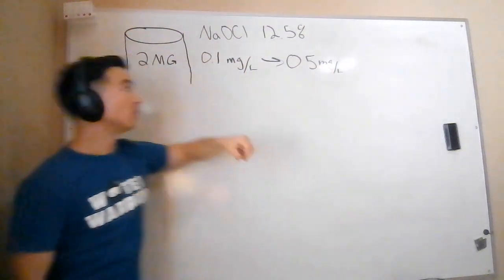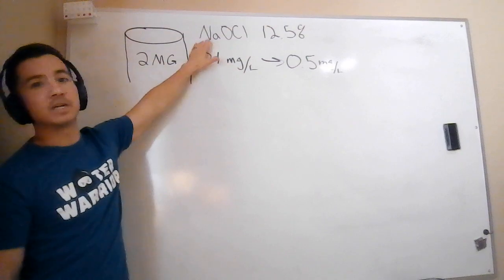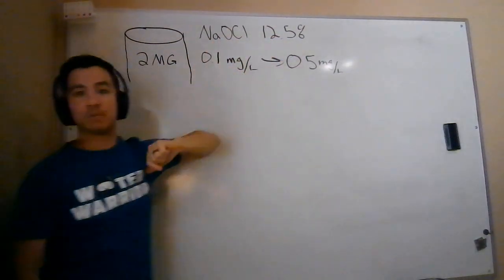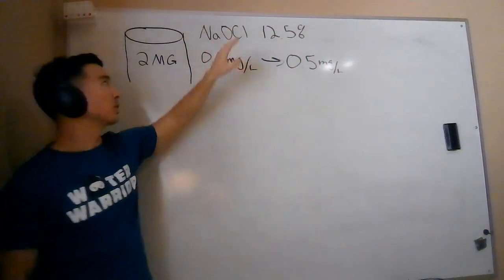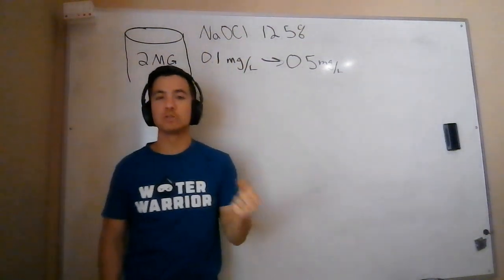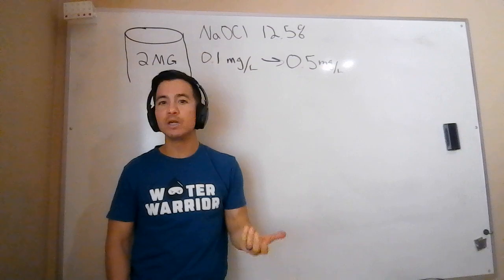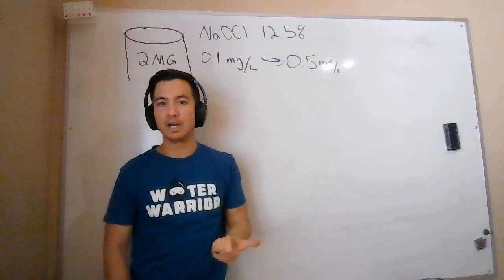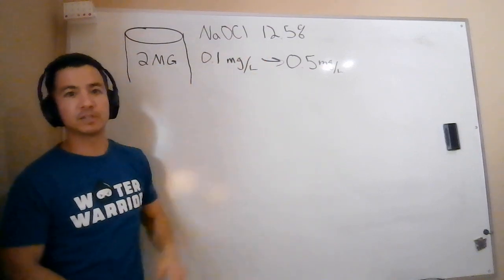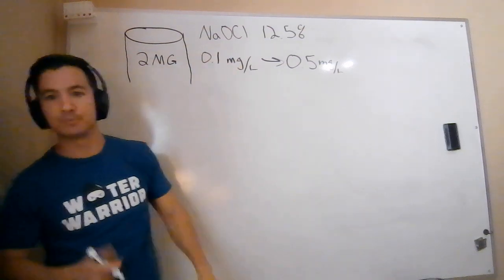We're going to be doing that with sodium hypochlorite, and the concentration of that sodium hypochlorite is 12.5%. Remember, sodium hypochlorite is the active ingredient in household bleach. The bleach you have at your house is going to be a little bit weaker, not quite 12.5%, but this is what we're using in this case to dose this reservoir. So we want to figure out how much we need to add.